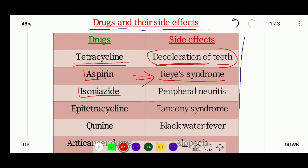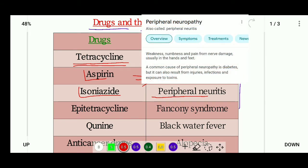Next is isoniazid, which is an anti-tubercular drug. Its side effect is peripheral neuritis. Peripheral neuritis involves weakness, numbness, and pain from nerve damage, usually in the hands and feet. Due to inflammation and damage of peripheral neurons, numbness and pain occur. This is the side effect of isoniazid.